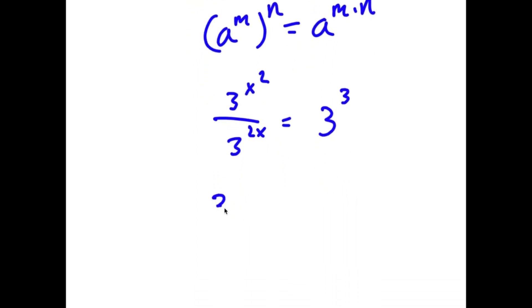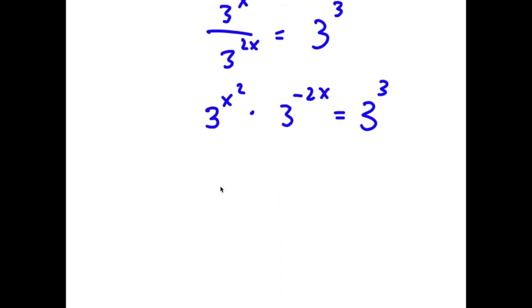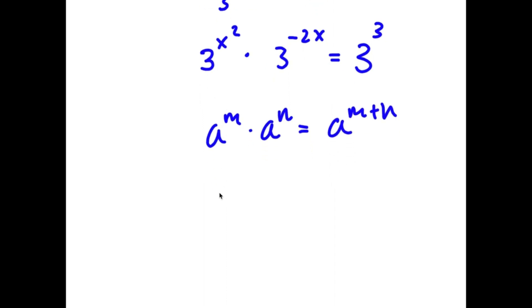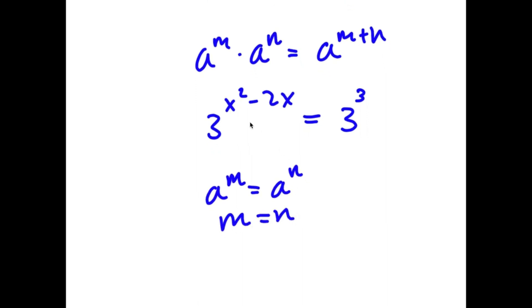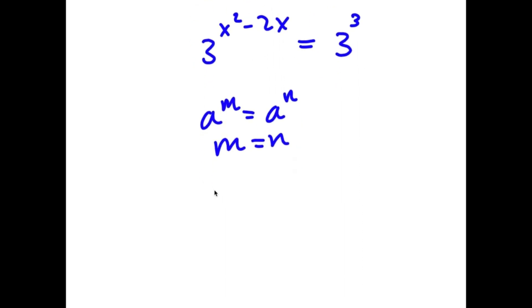I can rewrite this as 3 to the power of x squared times 3 to the power of negative 2x is equal to 3 to the power of 3. Using the rule a to the power of m times a to the power of n equals a to the power of m plus n, this becomes 3 to the power of x squared minus 2x is equal to 3 to the power of 3. Since the bases are equal, x squared minus 2x is equal to 3.